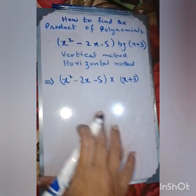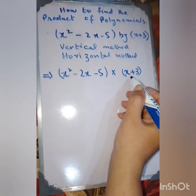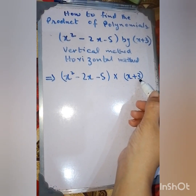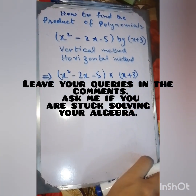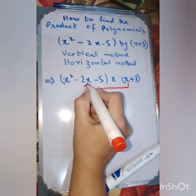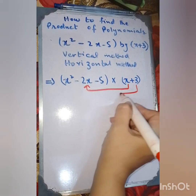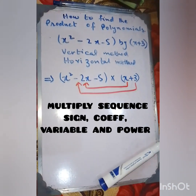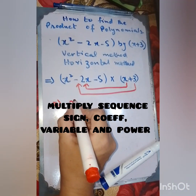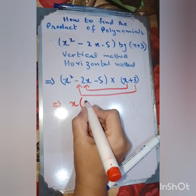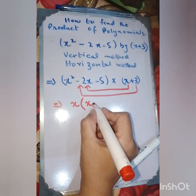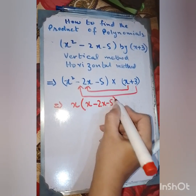I'm going to write it in brackets to distinguish the two expressions. The first expression has components x and plus 3. So x is going to multiply the whole bracket, and then plus 3 is also going to multiply the whole bracket. We write x outside, then copy the whole bracket from x squared to minus 5.